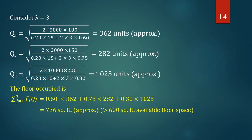With λ = 3, Q1 = 362 units, Q2 = 282 units, and Q3 = 1025 units. The floor space occupied is 0.60×362 + 0.75×282 + 0.30×1025, which turns out to be 736 square feet. This is still much higher than 600 square feet, so we increase λ further.